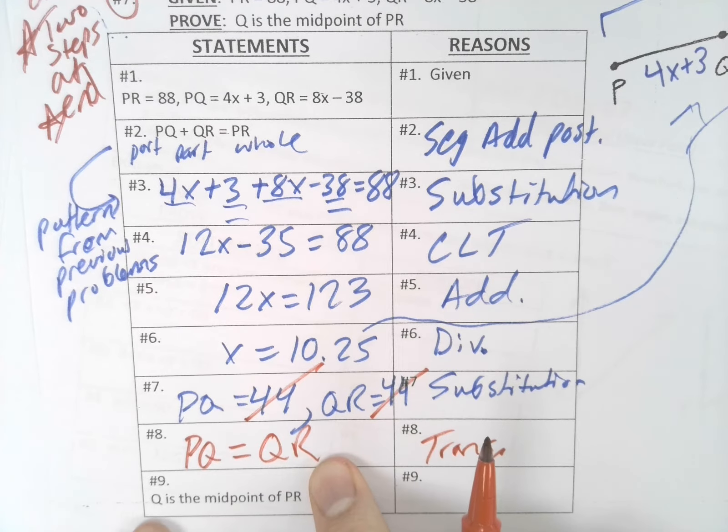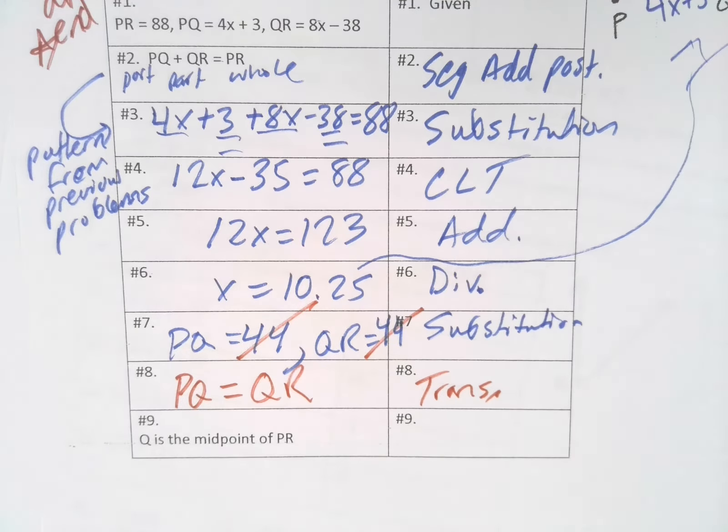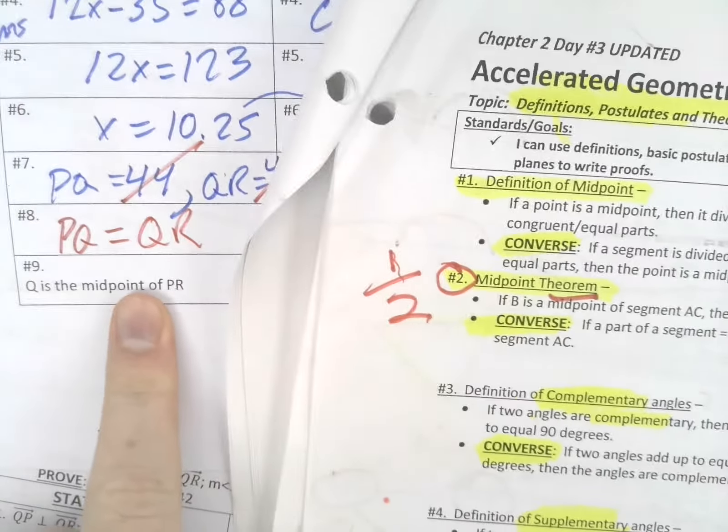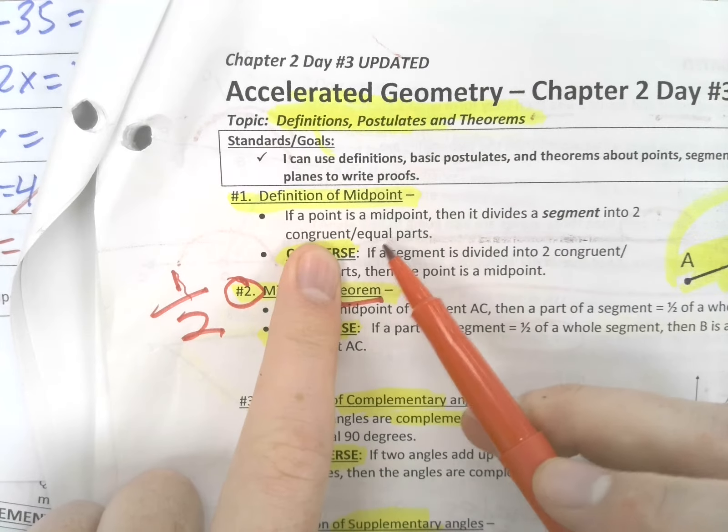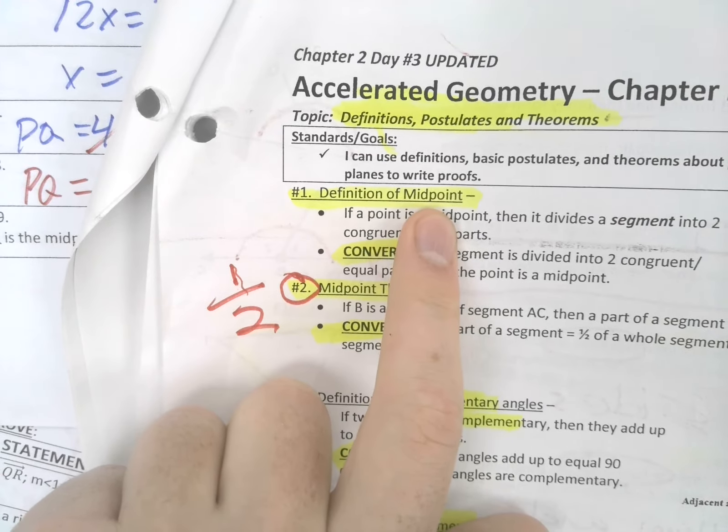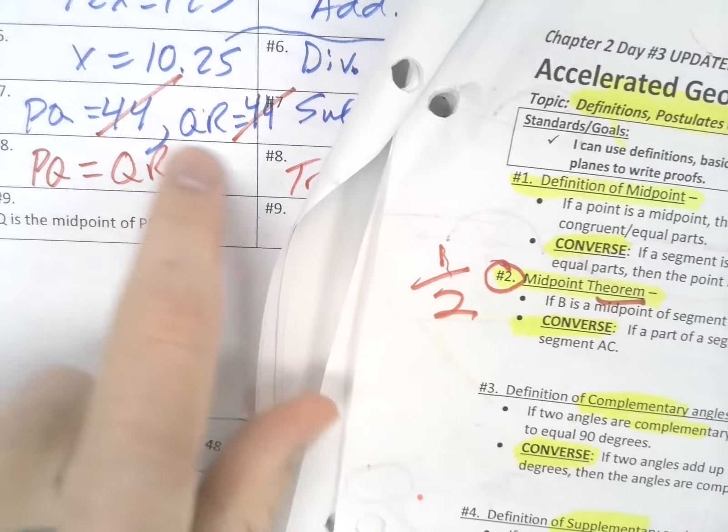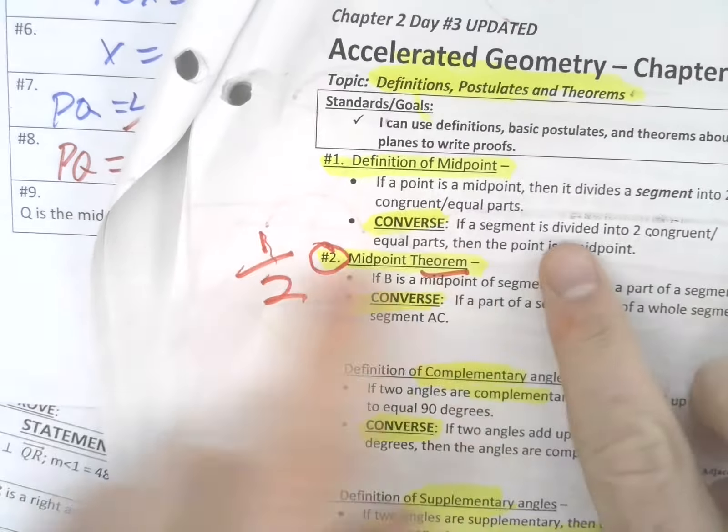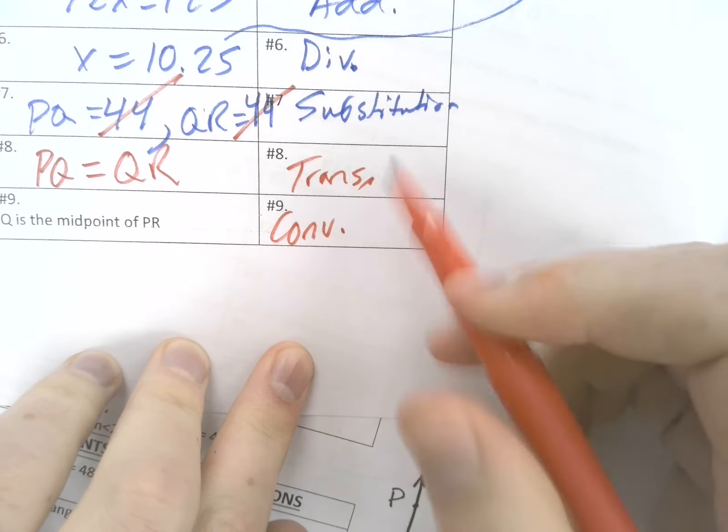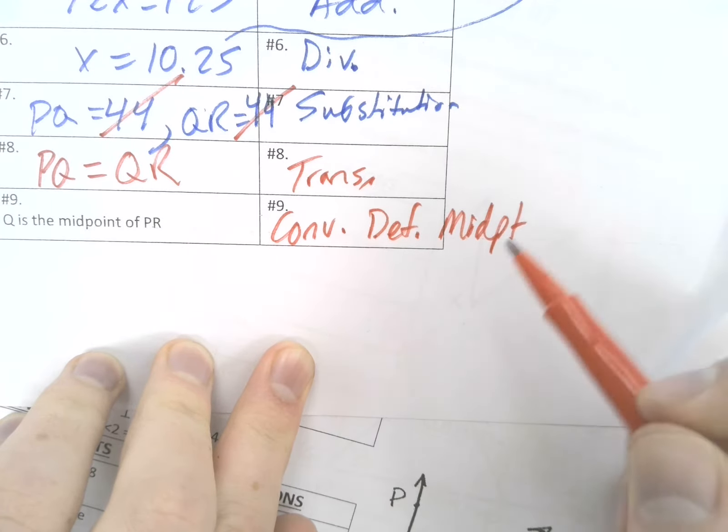So if PQ is 44 and QR is 44, using the transitive property we can say PQ is really equal to QR. And so if PQ equals QR, we know Q is the midpoint of PR. Now here's where things get tricky. What is going to let us say that Q is the midpoint? The conclusion here is not based off the definition, it's based off the converse. If a segment is divided into two congruent equal parts, then the point is a midpoint based off the converse.